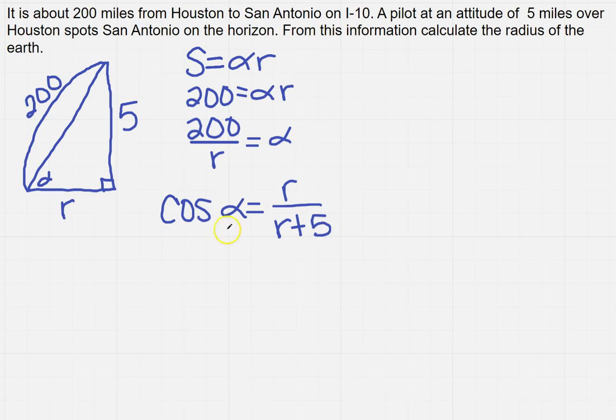Now, when we do that, we know everything except R because we just found alpha up here at the top. So I'm going to get the cosine of 200 over R equals R over R plus 5.